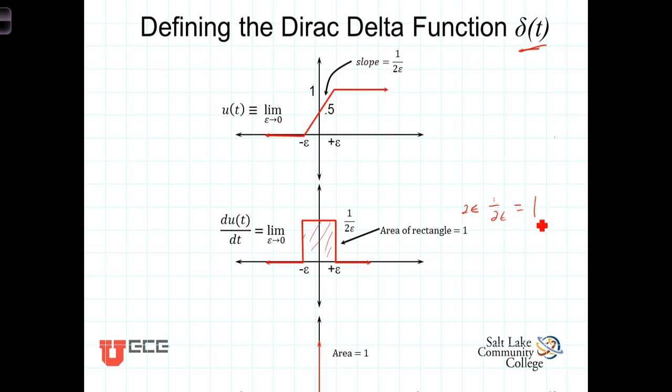In the limit, the width of this pulse goes to zero, the height of the pulse goes to infinity. Graphically, we represent that as an arrow at the point of the discontinuity, the arrow suggesting that it is infinitely great in height, but again, because it's zero in width, the zero times infinity gives us that constant area of one.